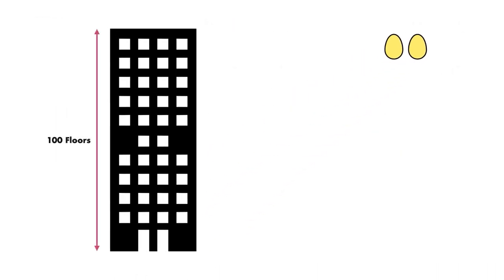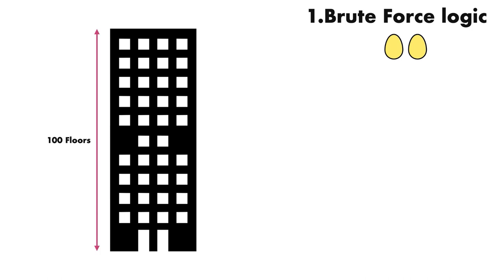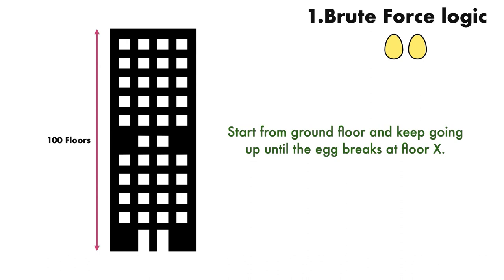Let me explain the solution. We can assume the eggs break at the same floor and what we are looking for is the next floor down — our highest non-breaking floor. We can also assume once an egg is broken, it's gone forever. Some solutions are pretty simple. If you don't care about how many tries it takes, you can just start dropping eggs on floor 1 and go up until you have reached the correct floor, floor by floor.